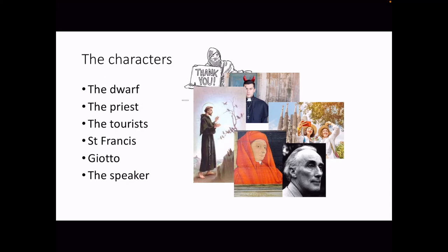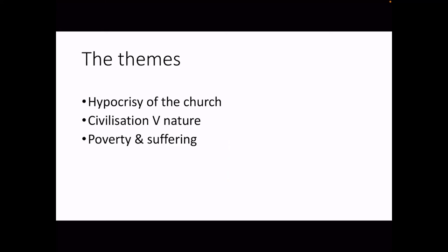For our characters: we have the dwarf, the priest who is shown to be the worst character, the tourists who are ignorant but not necessarily morally at fault, St Francis who was an incredibly important figure in the church and did a lot of good for poor people, Giotto who is a painter referenced briefly, and the speaker who is Norman McCaig — or a proxy for him. It's really important that you don't mix these up. These are all separate people, most of whom lived at different times.